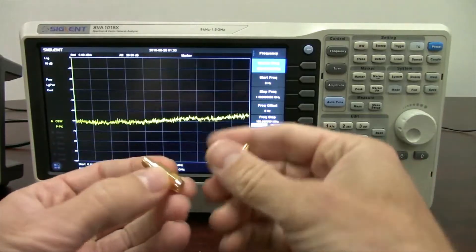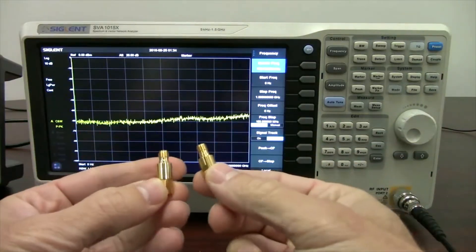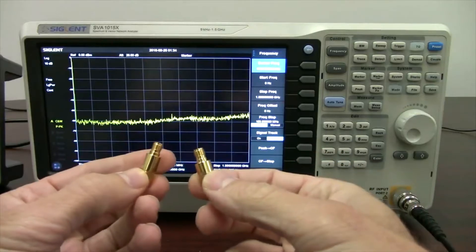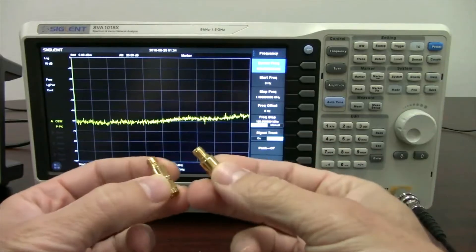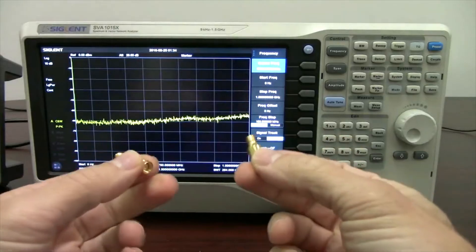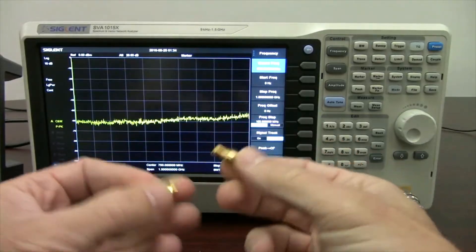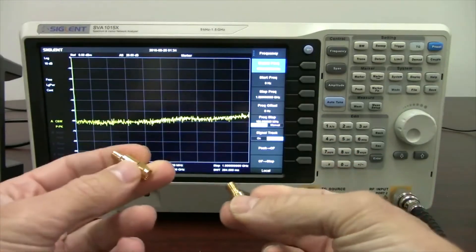I ordered some attenuators, these are SMA attenuators. I ordered two different types, a 10 dB and a 20 dB and they did not come labeled. So I'm going to use the SVA to help figure out which one of these is the 10 dB attenuator and which one's the 20.